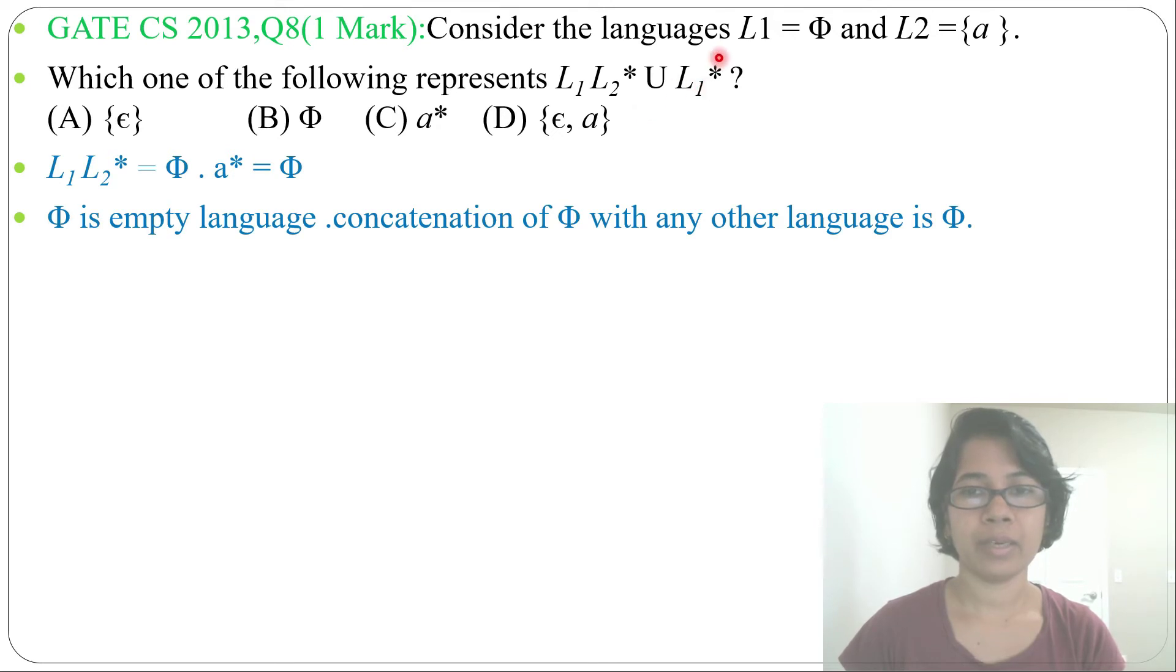Now we'll find L1 closure. What is L1? L1 is Phi and Phi closure will be Epsilon. So L1 closure we got Epsilon.